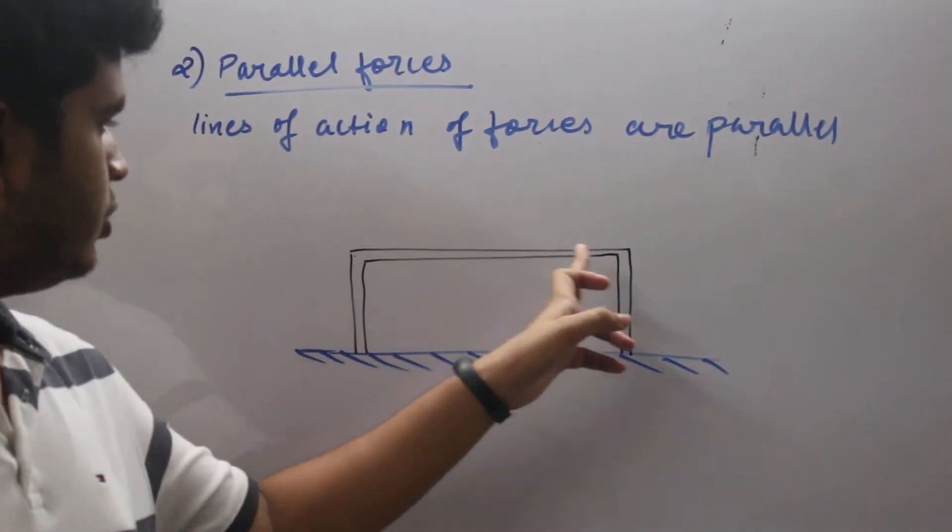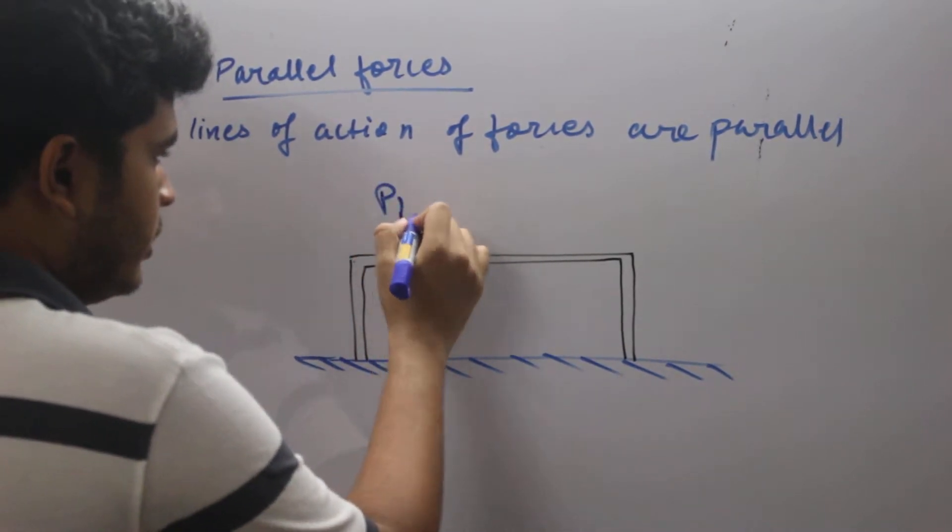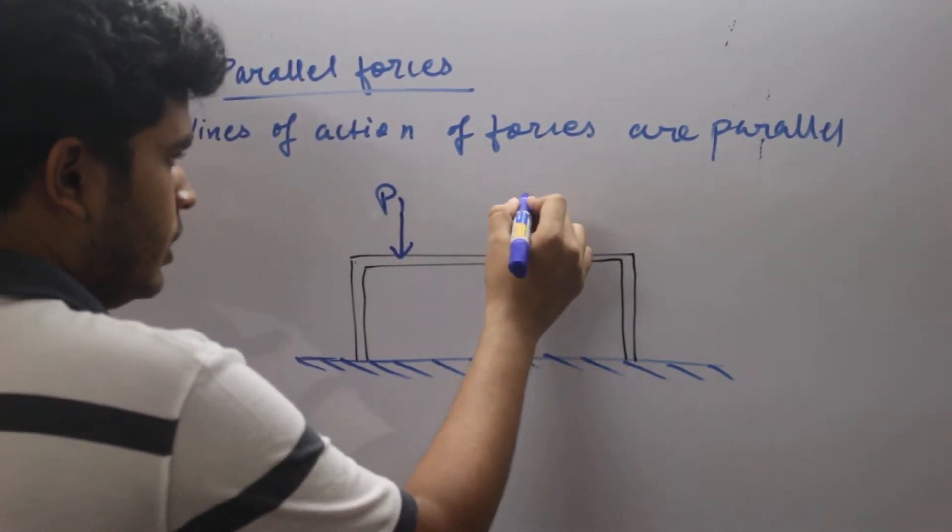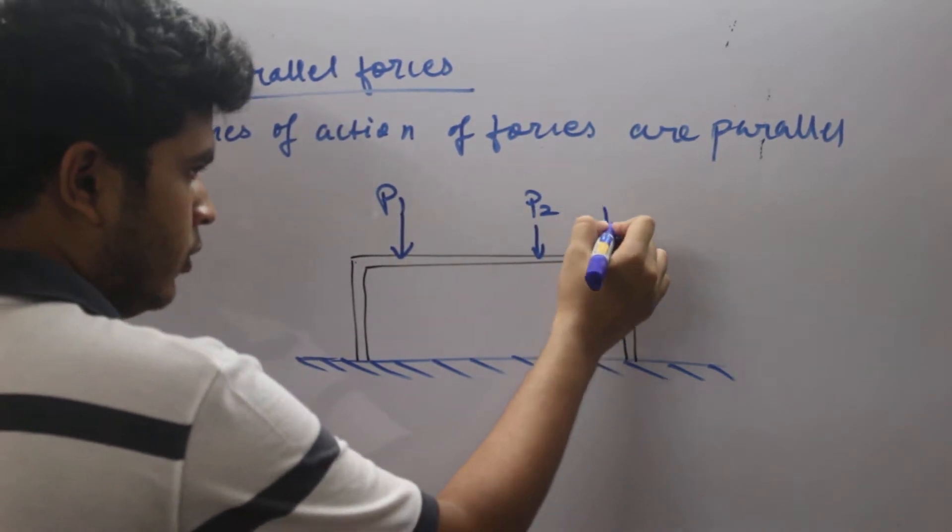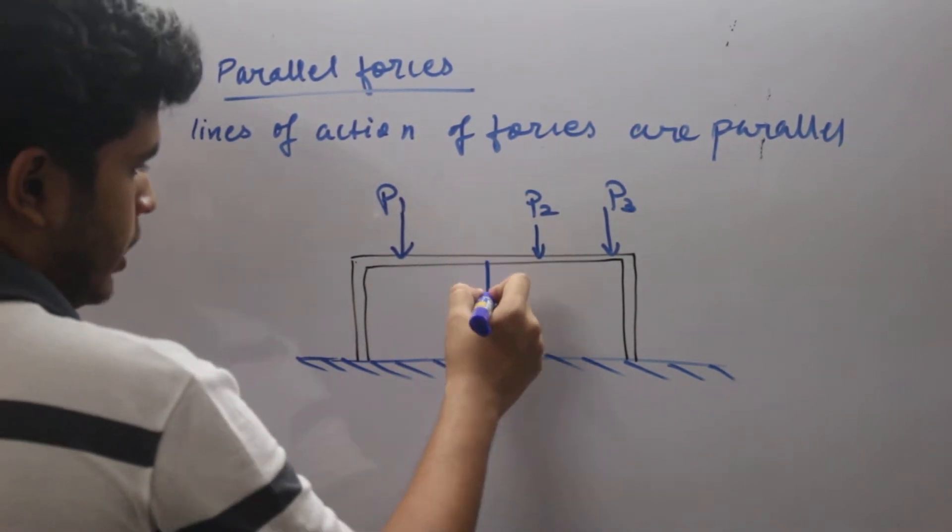On this bench, three people are sitting. Weight of the first person will be acting downward, weight of the second person will be acting downward, and weight of the third person will be acting downward. Weight of the bench will also act downward from the center of gravity.